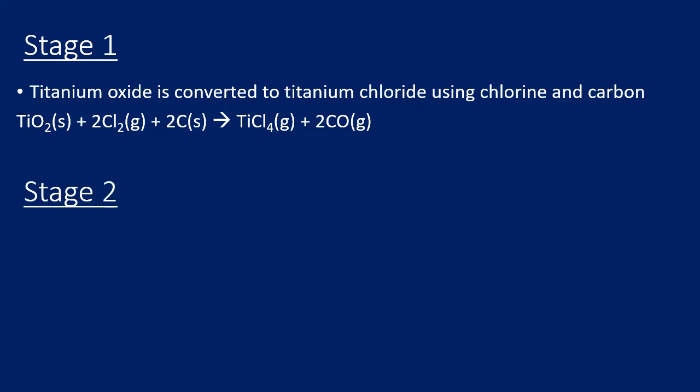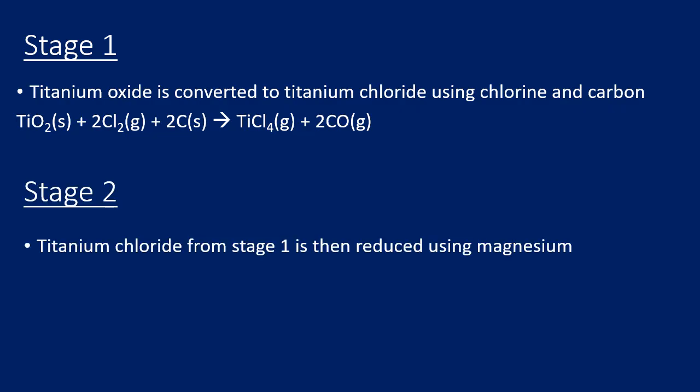For stage two, we take this titanium chloride and reduce it with magnesium. So magnesium is being used to remove the chlorine: titanium chloride plus magnesium gives us titanium and magnesium chloride. Be careful with your chemical formula in that balanced equation.